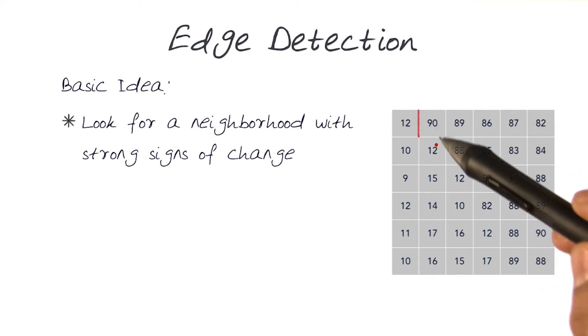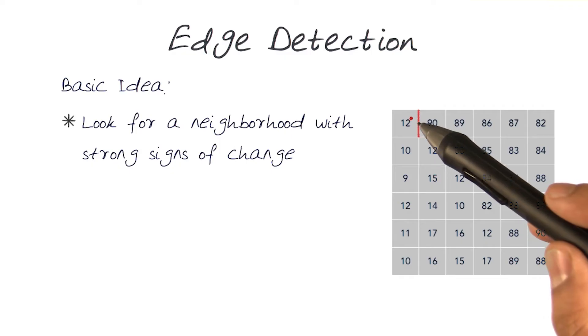And of course, there is a significant discontinuity, 12 intensity to 90. We can basically start looking at that one by one throughout the whole image.